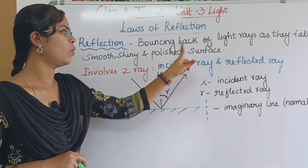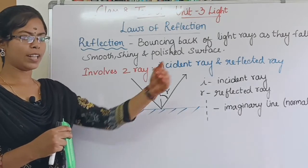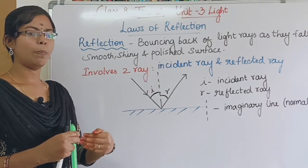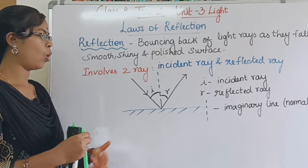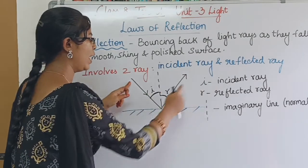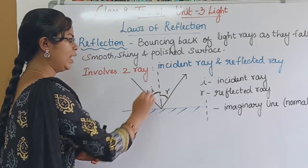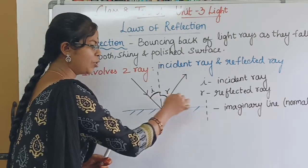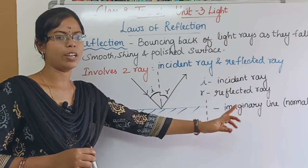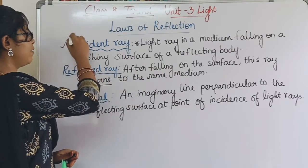One is the Incident Ray and the other is the Reflected Ray. The light ray falling on the surface is the Incident Ray, and the ray that bounces back is the Reflected Ray. The mirror is perpendicular to the imaginary line — that line is called the Normal.